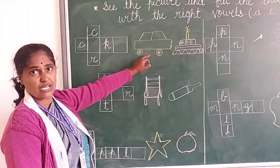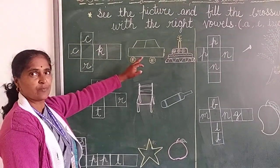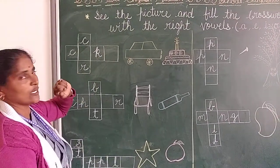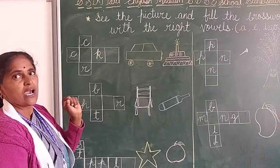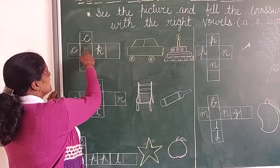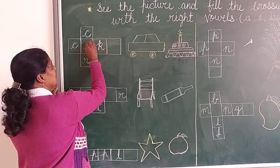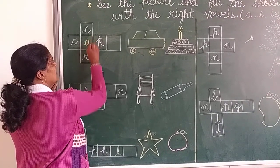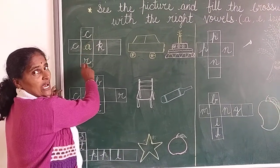See here, which is this picture? Car. This is a picture of car. What is the spelling of car? C-A-R, car. We will write here C, A, R. Car.